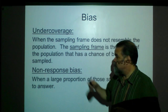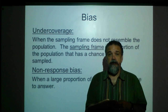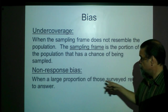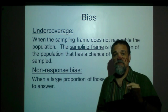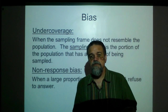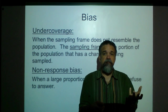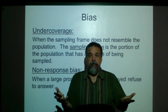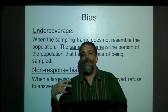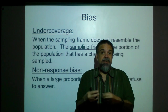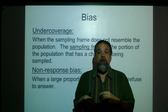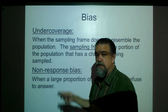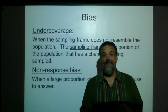Another problem they had was non-response bias. They got 2,400,000 responses, but they sent out over four times that many. When a large proportion of those surveyed refused to answer, that's non-response bias. Those who do choose to respond might not be like those who didn't. It could be that people who were poor couldn't afford the envelope and stamp to send it back. So the people who responded really didn't look like the rest of the people at all. This survey suffered from both of these problems.